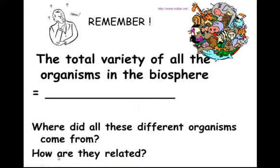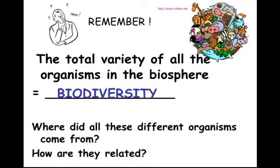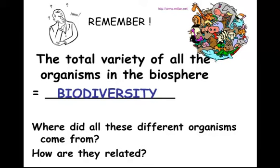If you remember back to past chapters, we talked about this idea in our environment chapters, and in the classification chapter. It's been a vocab word for the past few chapters, and it has to do with all the different organisms that live on our planet in the biosphere — lots of different species. When we start thinking about biodiversity, it leads to some questions. Where did all these different organisms come from, and how are they related to each other? We talked about that a little bit in our last chapter on classification.